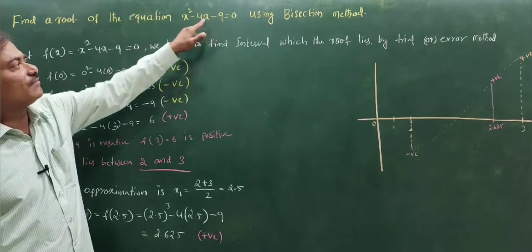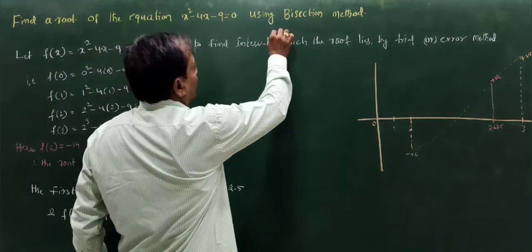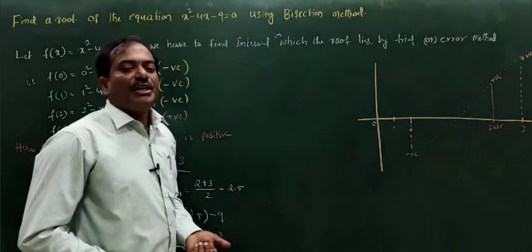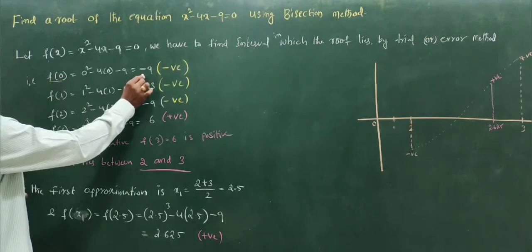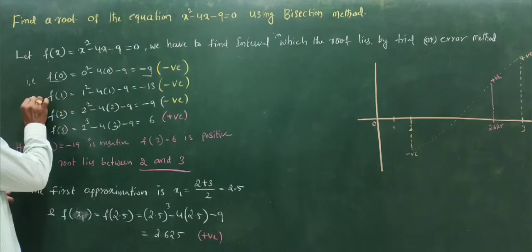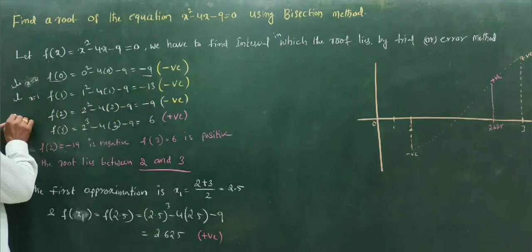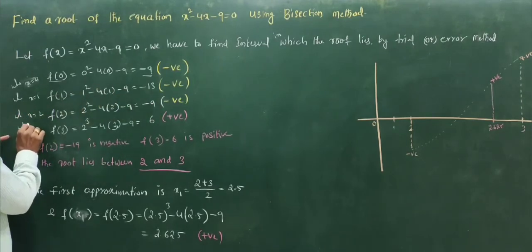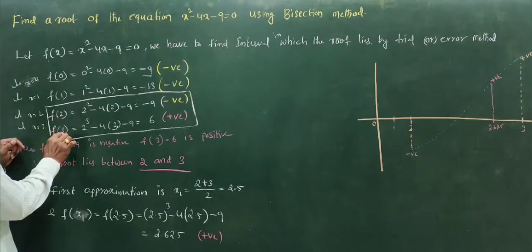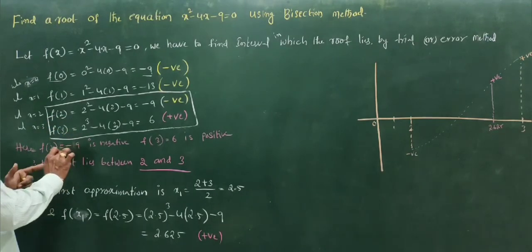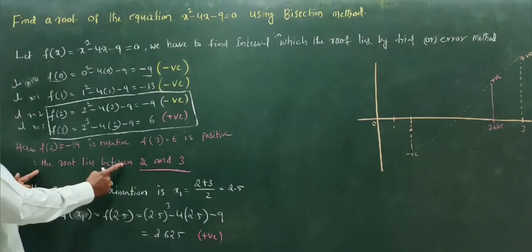Let f(x) = x³ minus 4x minus 9. We find the interval by trial and error, substituting values: at x = 0 we get minus 9 (negative); at x = 1, negative; at x = 2, negative; at x = 3, positive. So we consider the interval [2, 3], because f(2) is negative and f(3) is positive, meaning a root lies between 2 and 3.